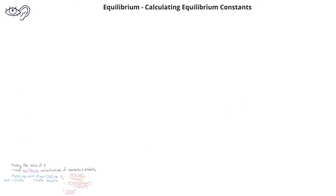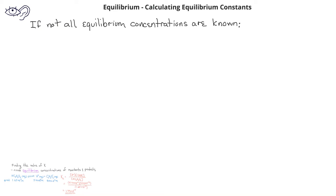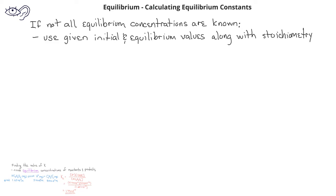That problem was a little too easy because the equilibrium concentrations were already given to us. In many situations, we will not know the equilibrium concentrations of all the species. We might know some of the initial concentrations and maybe one of the equilibrium concentrations, but we can use what we know about stoichiometry to determine them. We do this using what's known as an ICE table, where ICE stands for initial, change, and equilibrium.